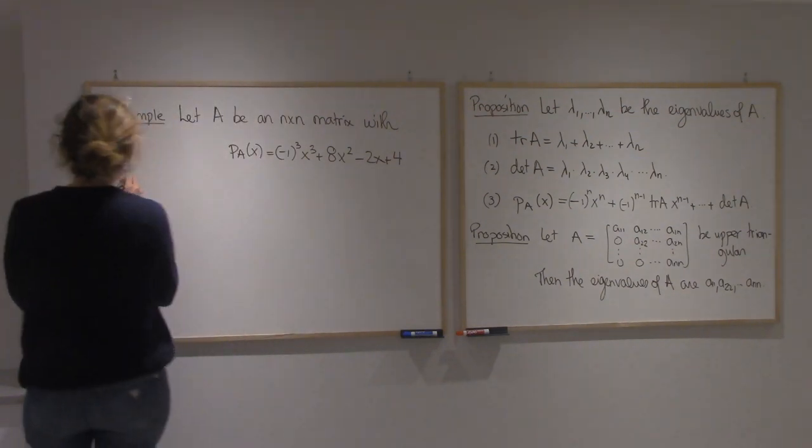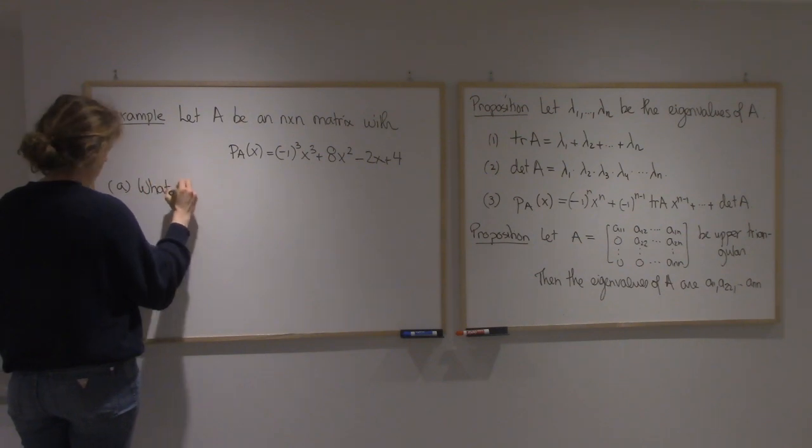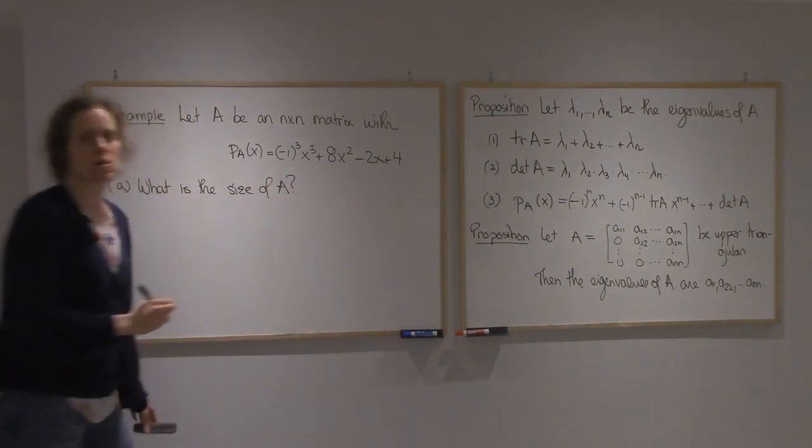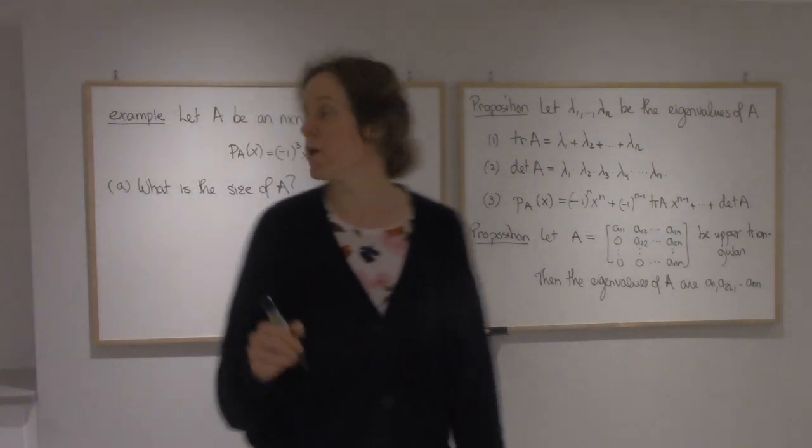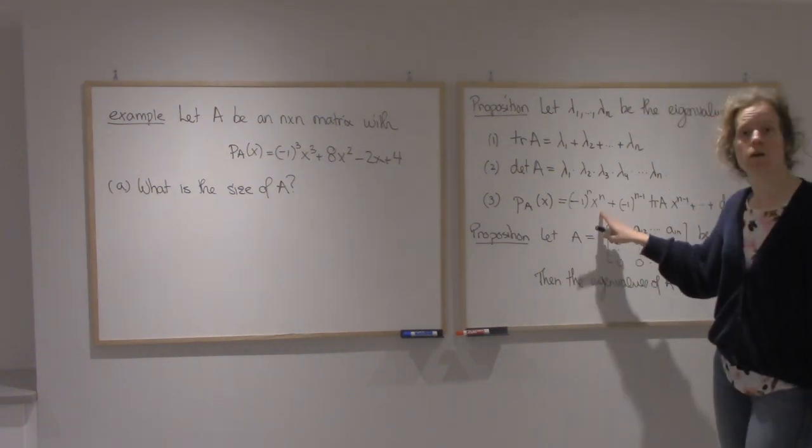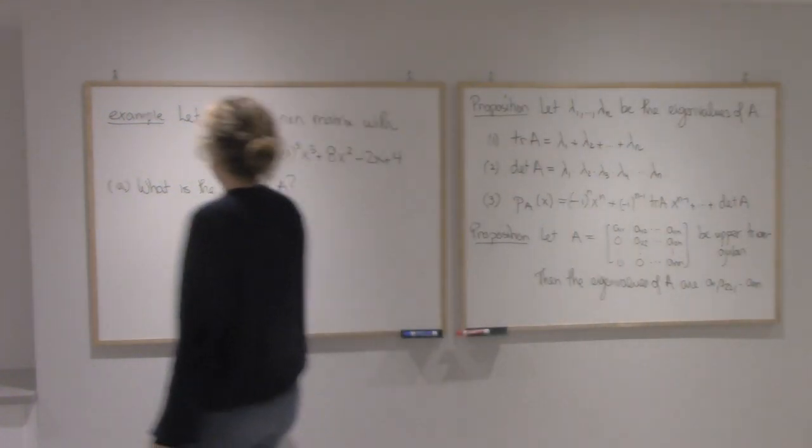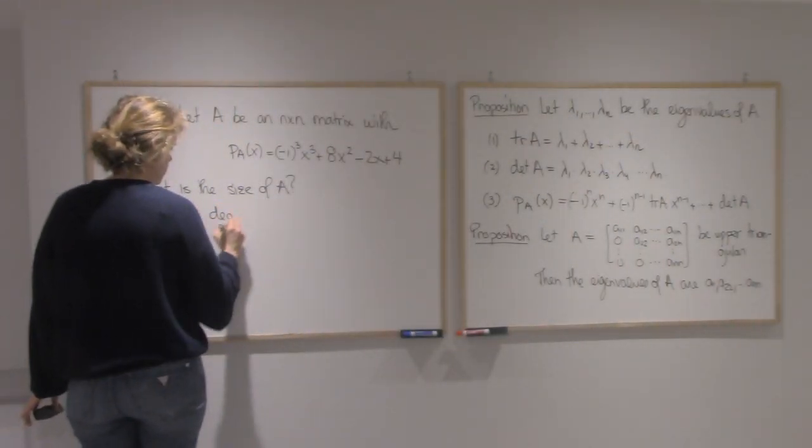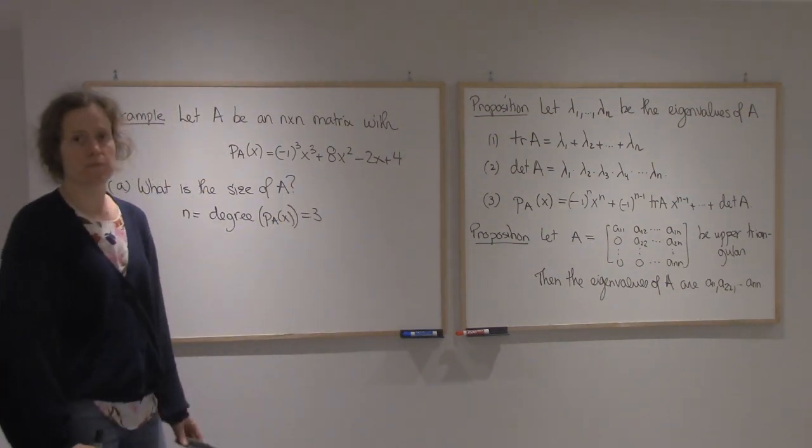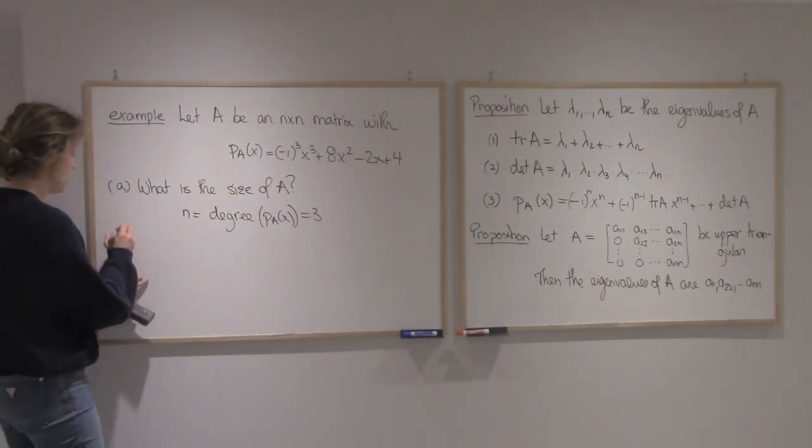I told you it was an n by n matrix; I claim we can do better now. What's the size of A? The size is the top degree of the characteristic polynomial. So n equals the degree of PA(x), which is 3. You get one x for each row, so if you get x^3, you have 3 rows.